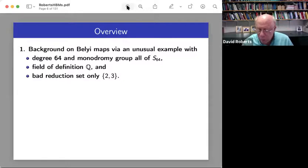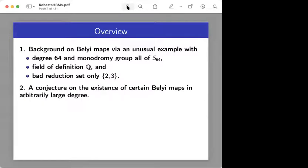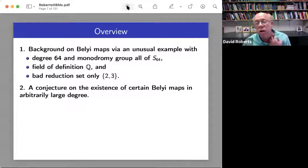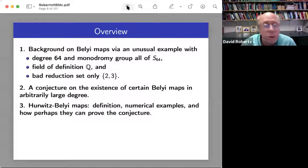So these three things that I've just put up, monodromy group, field of definition, and bad reduction, I'm sort of going to be considering them together often. I'm going to be referring to them as the big three. So that's going to be like the first 15 or 20 minutes of my talk.